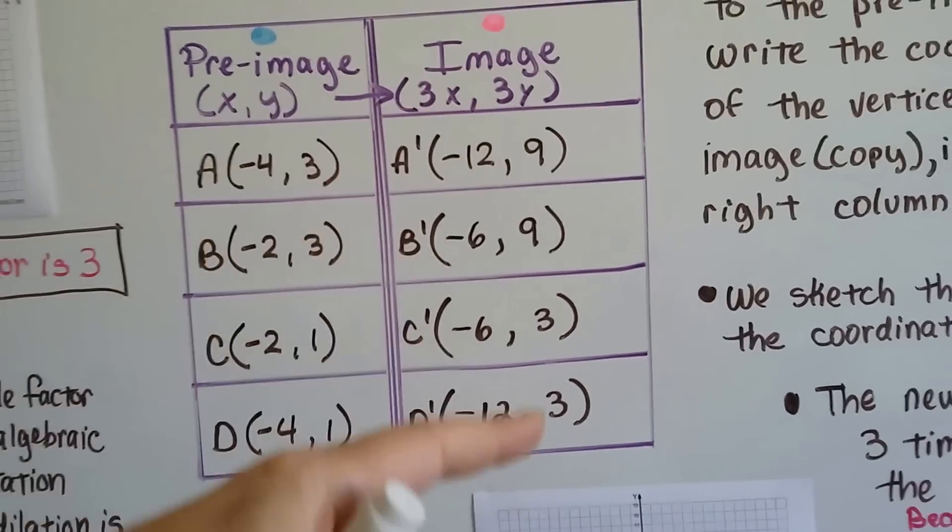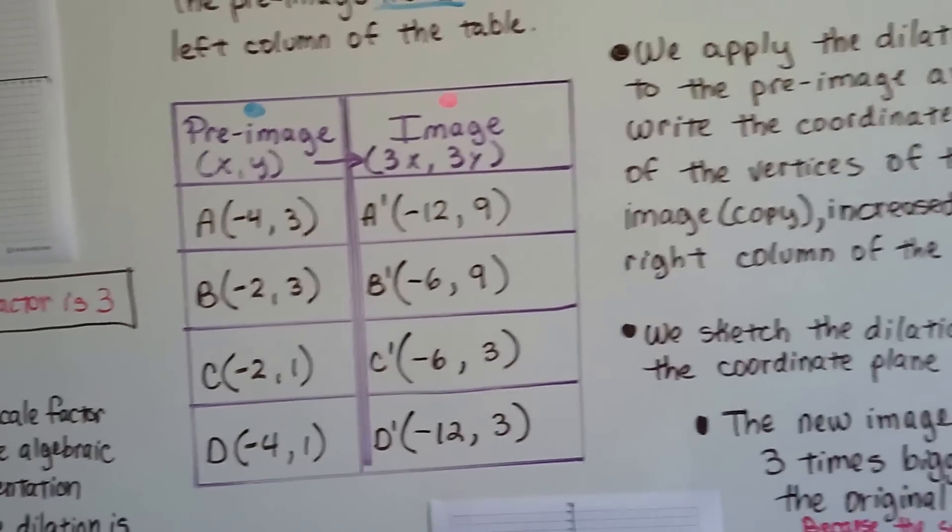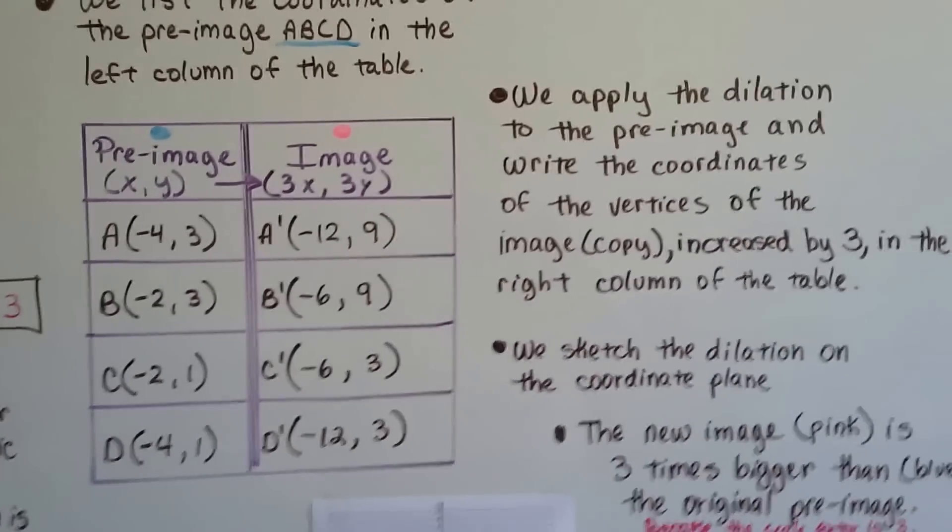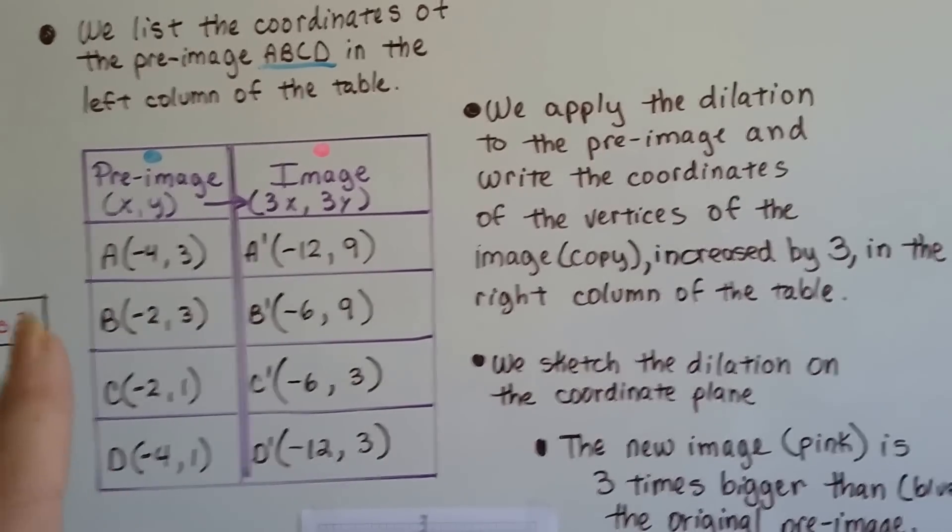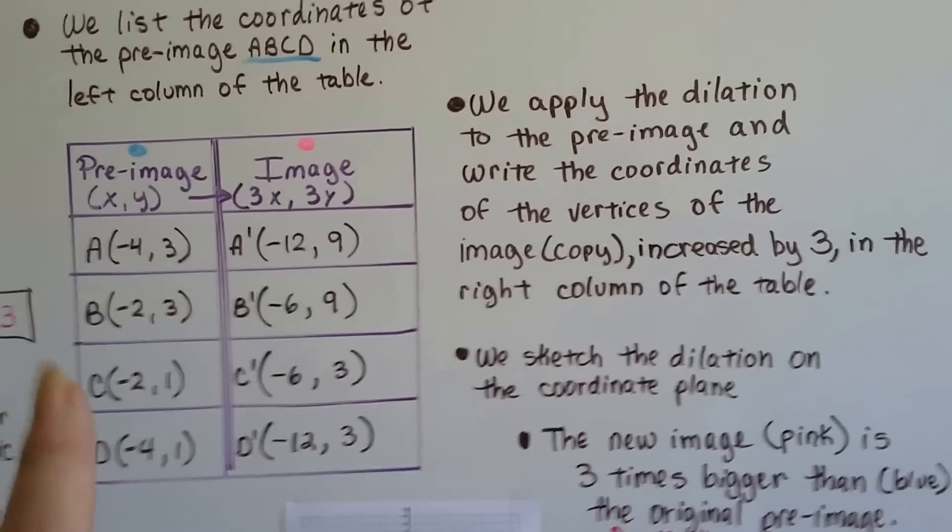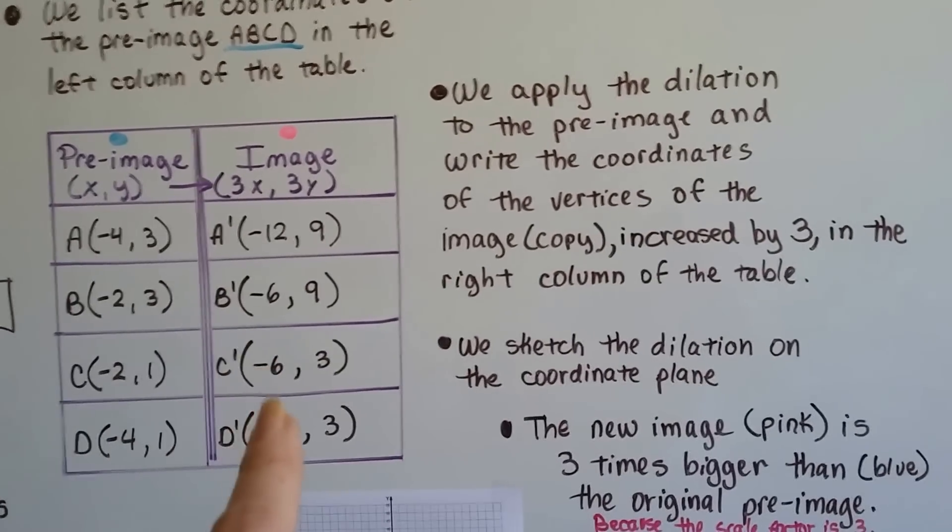So now we have our image coordinates. We apply the dilation to the pre-image and write the coordinates of the vertices of the image, the copy, increased by 3 in the right-hand column of the table.